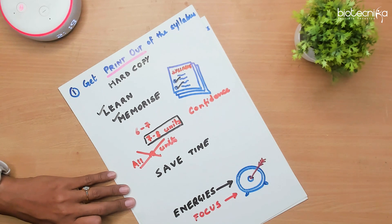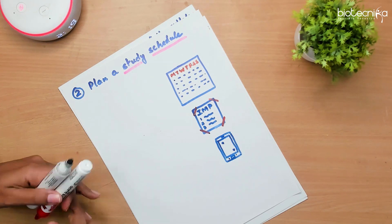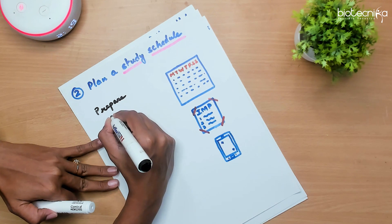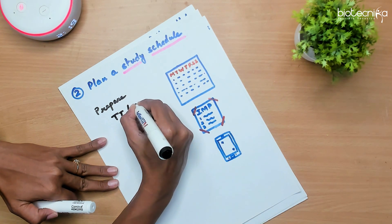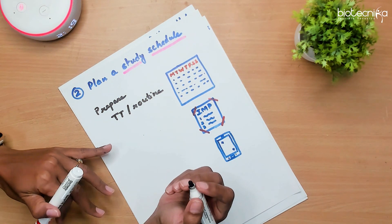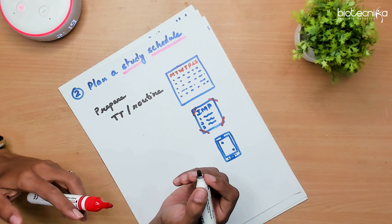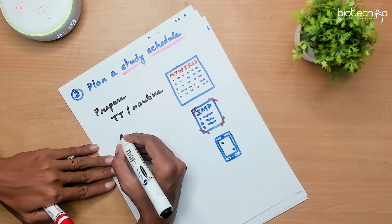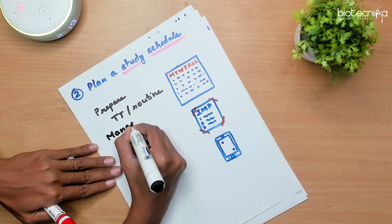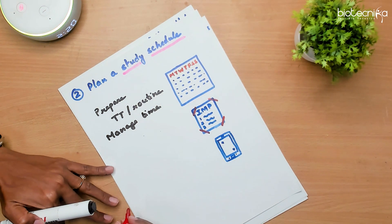Second strategy for this is plan a study schedule. Yes, so what you need to do? You need to prepare a timetable or a routine. If not very explicitly but at least some detailing must be there, which topic to study on which day. Time you can skip. This will help you manage time very efficiently, helping you to study in a very effective way.